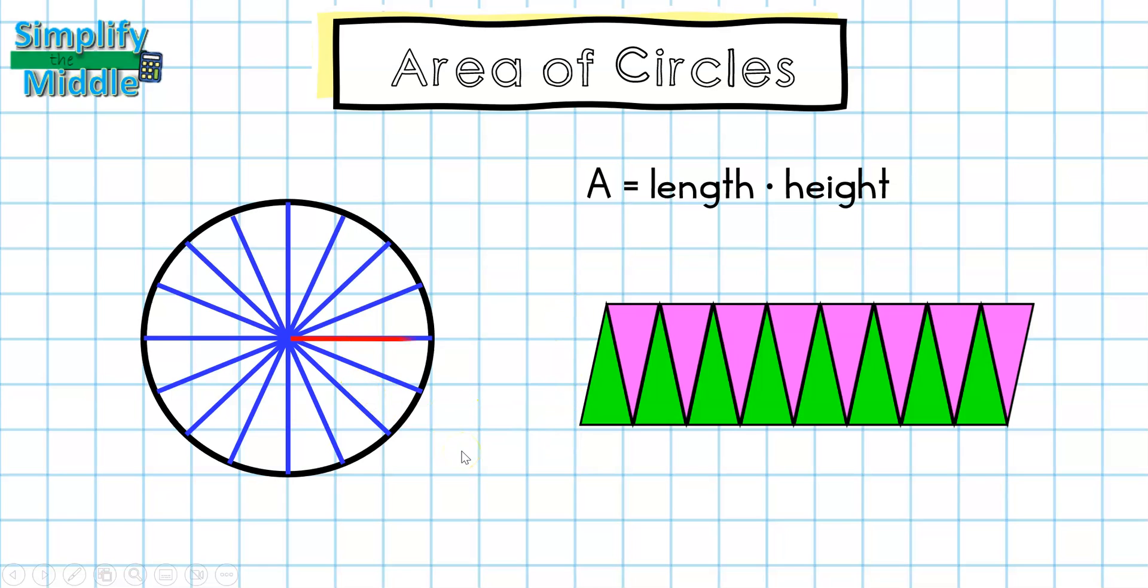Looking at the circle, there's something interesting. The distance from the center to the outside edge happens to be the same distance from the bottom to the top of this parallelogram. And that distance in this particular circle is our radius, so I'm going to replace that line with the letter r for radius.